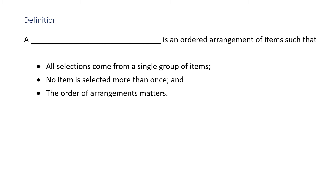Definition: A permutation is an ordered arrangement of items such that all selections come from a single group of items, no item is selected more than once, and the order of arrangement matters.